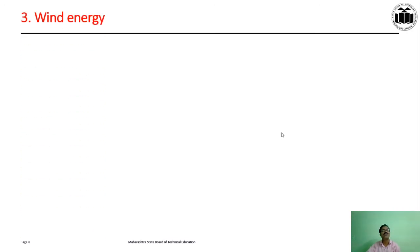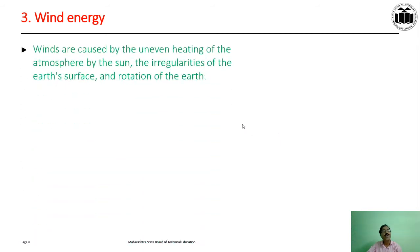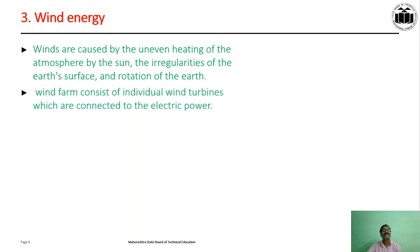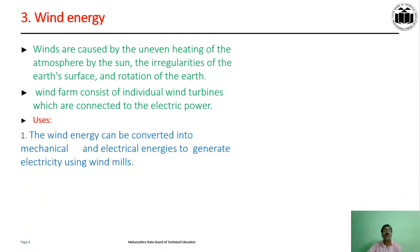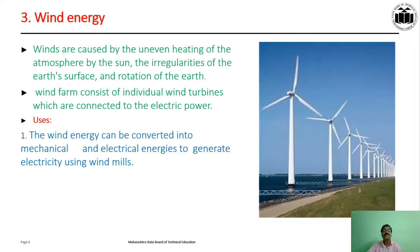Wind energy is due to the wind. Winds are caused by the uneven heating of the atmosphere by the sun, the irregularity of the earth's surface and rotation of the earth. Wind farms consist of individual wind turbines which are connected to the electric power. Wind energy can be converted into mechanical and electrical energy to generate electricity using a windmill. This figure shows how the windmill is used for generating electricity.